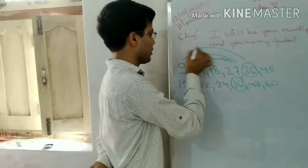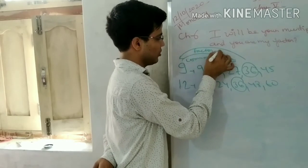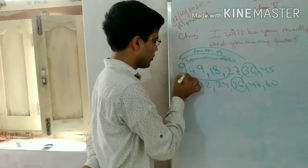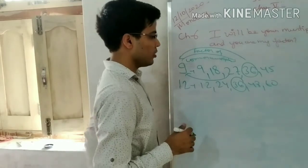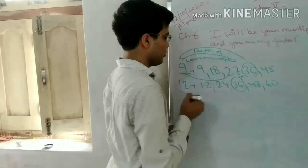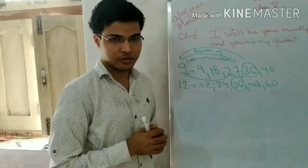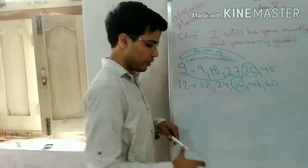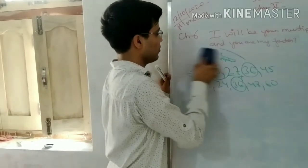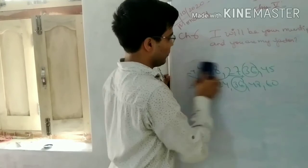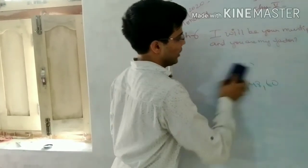You can say that 36 is a multiple of 9, and in the same way 27 is also a multiple of 9. Now, factor means: if you divide any number, those numbers by which you can divide it exactly — those are the factors of that number.